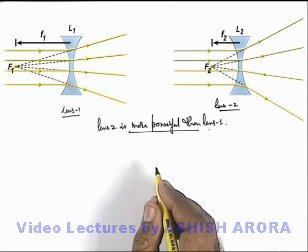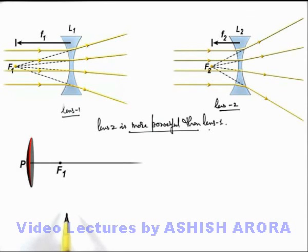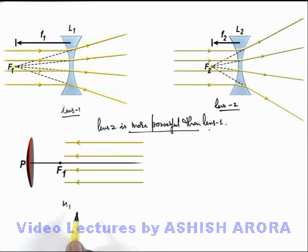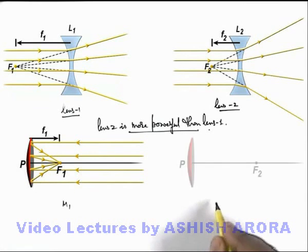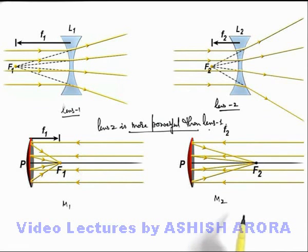So similar phenomena we can define for spherical mirrors also. Here we can see this is a concave mirror m1, on which say if parallel rays are incident, after reflection these rays are converged to a point at the focus of the lens which is at a distance f1. And say if this is m2 which is again a concave lens, where light rays are converging to a point f2 which is relatively far away from the mirror, and in this situation the focal length f2 is more than f1.